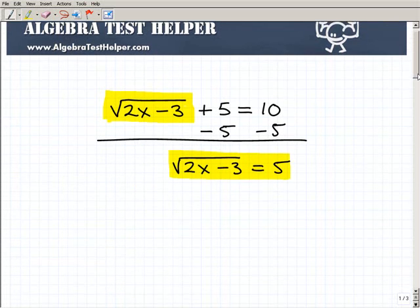Now step 2 is critical. Once you have the radical isolated, as we do here, now we have to get rid of the radical. In this case, because I have the square root...